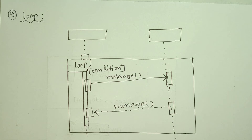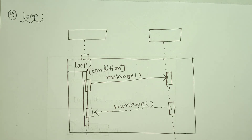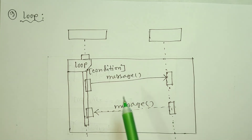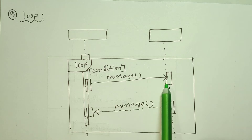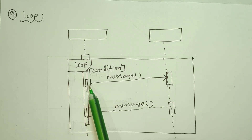If you use the option, the option will check the condition and execute. You check the loop here. If the option is true, you can see the loop in the programming process. Using the option will be true, and we will use the same method.